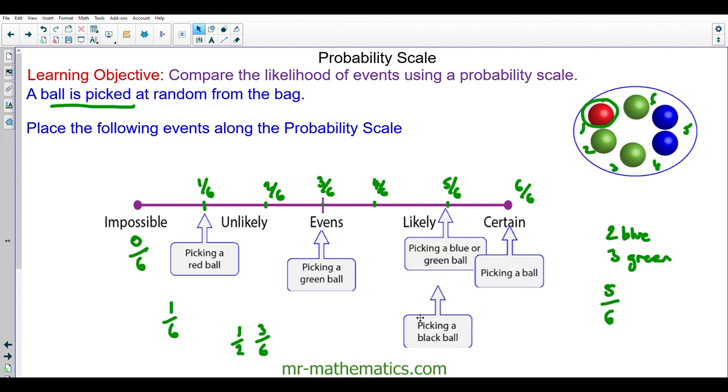And the last one, picking a black ball. Well, there are zero black balls. So that would be zero chances out of six, which is zero. So this would be impossible. Thank you for watching. I hope you found that useful. Thanks again and take care.